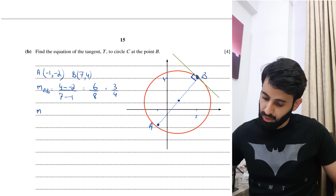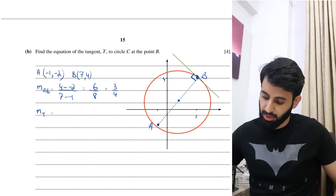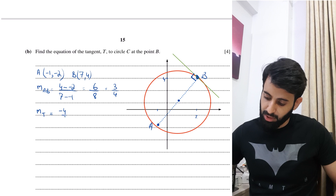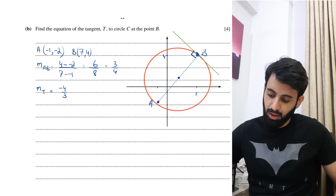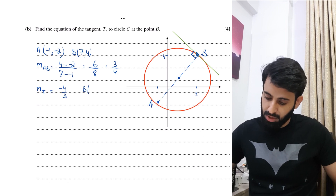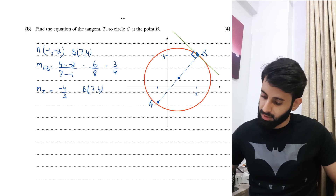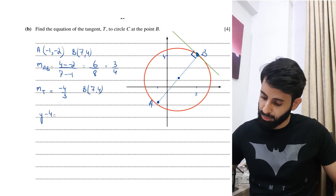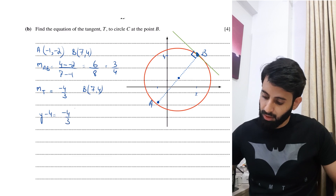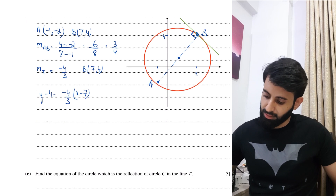So the gradient of the tangent T is minus 4 over 3. The point I'll use is B at coordinates 7, 4. Using point-slope form: y minus 4 equals minus 4 over 3 times (x minus 7).